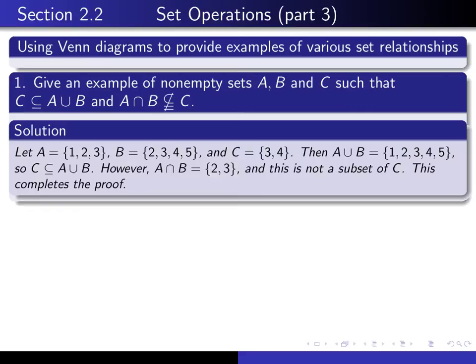So here's my solution. I take A to be, as we said, let A equal the set 1, 2, 3. B is 2, 3, 4, 5, and C is 3, 4. Now I just simply have to verify that these two things happen.